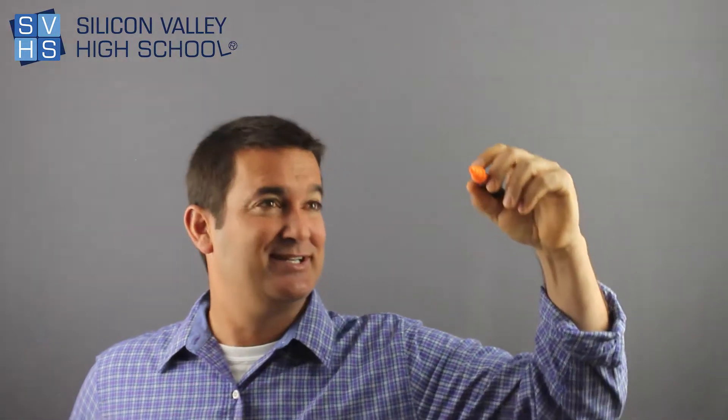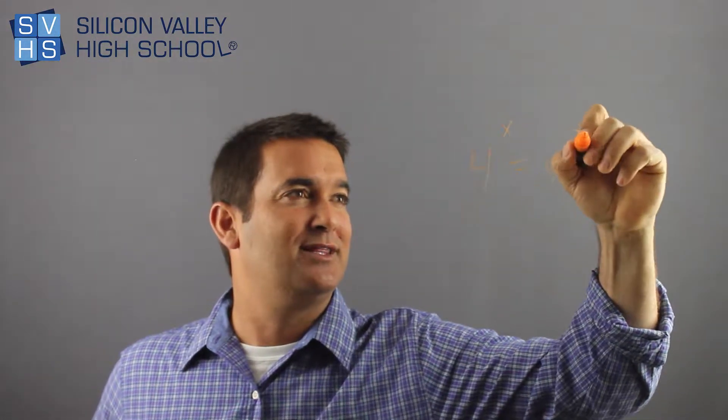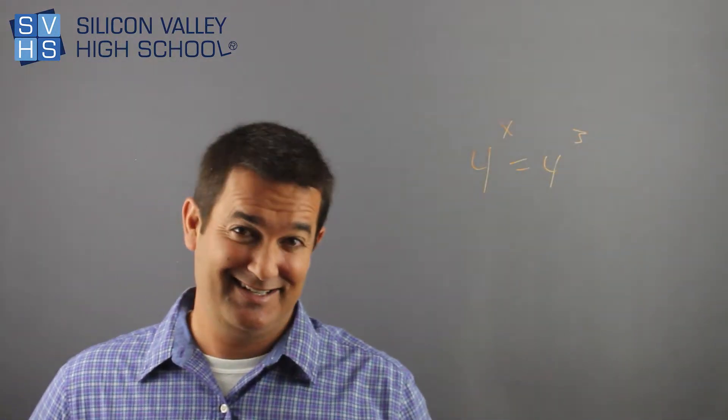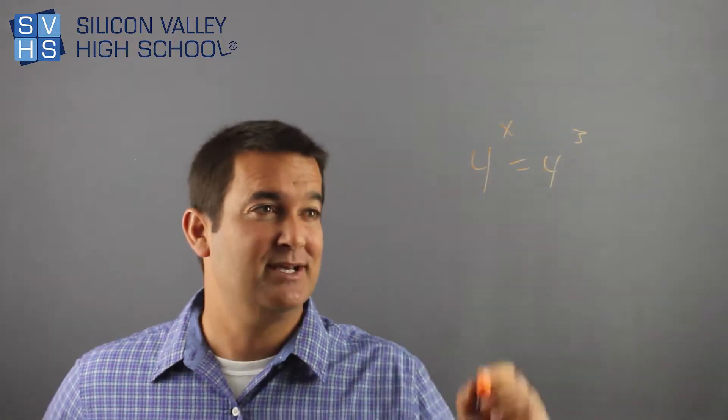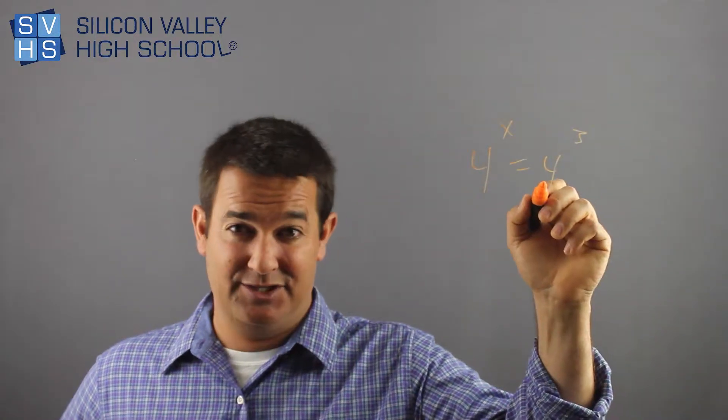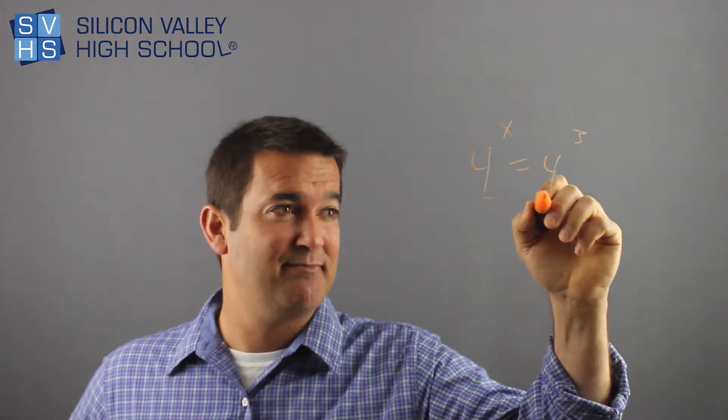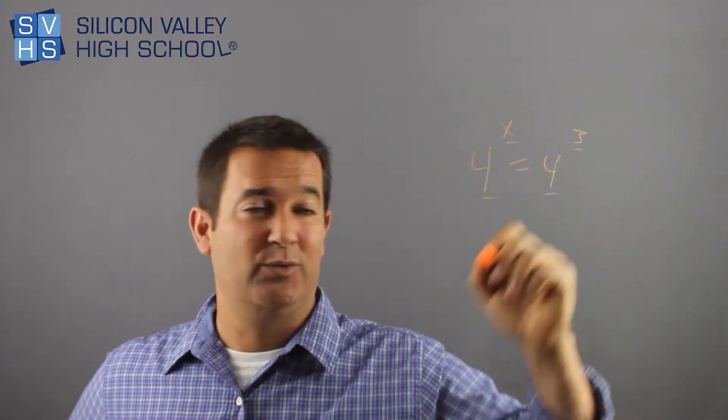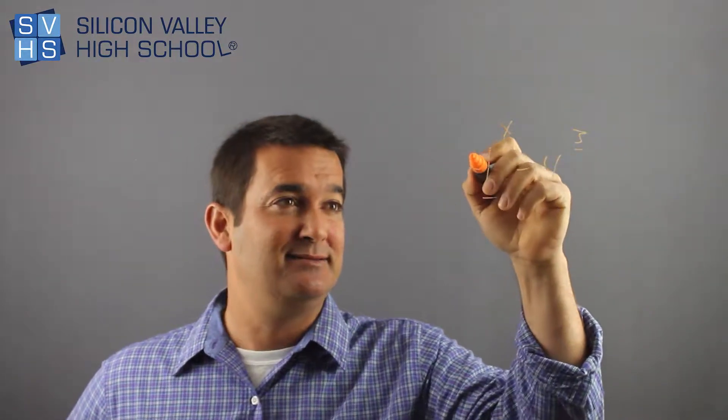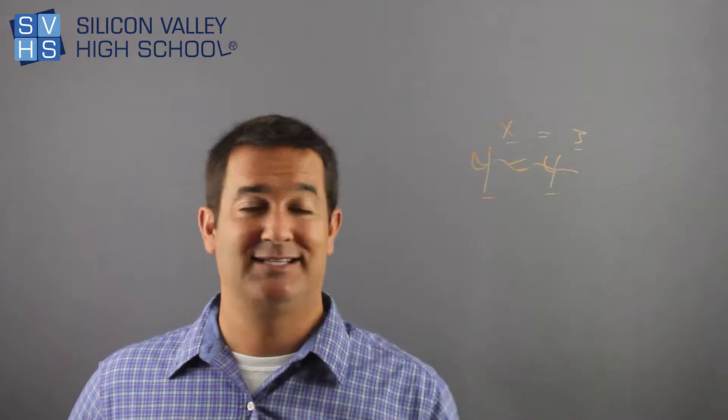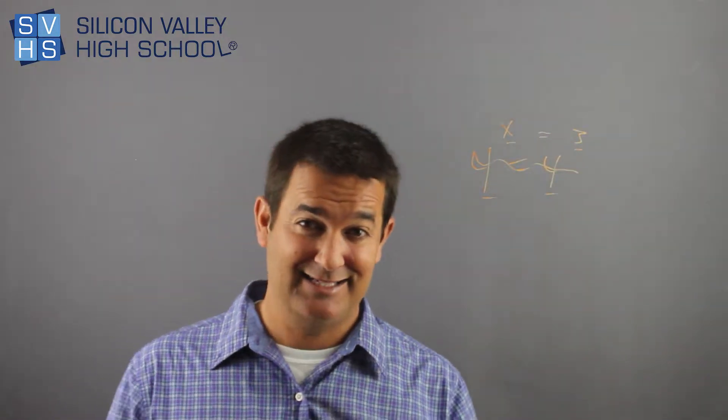The way to solve an exponential equation is this: You might have something like 4^x = 4^3. The rule is, and this is a simple concept, if the bases match, then the exponents equal each other as well. You can basically dissolve this and say x = 3. That problem is done.